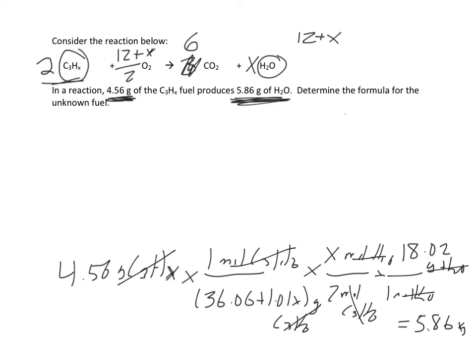So the only thing left should be the numbers. So I'm going to have 4.56 times 1 over 36.06 plus 1.01X times X over 2 times 18.02 equals 5.86.